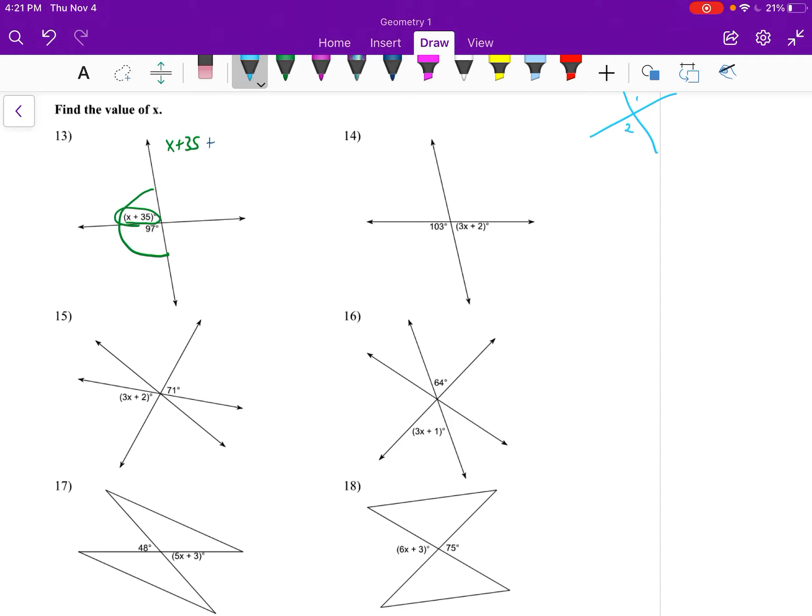So our first one we have x plus 35, that's this angle, and then we'll go ahead and add 97, and that has to equal 180 because it forms a linear pair. And then we just go ahead and solve this little equation.